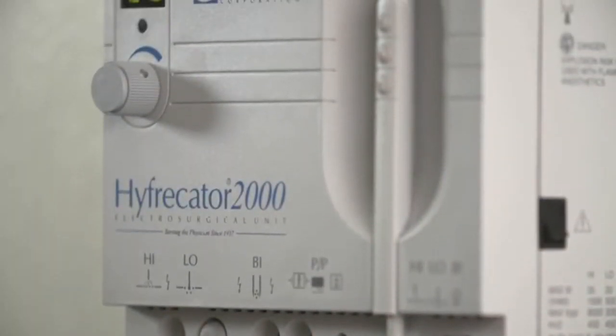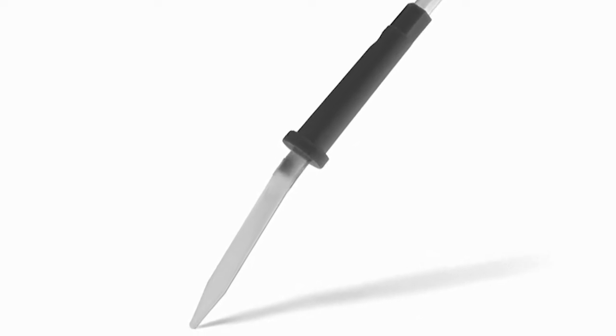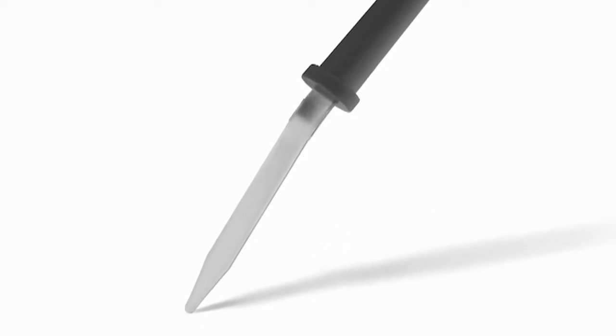Every electrosurgical procedure begins with the choice of the electrode and the power setting. The sharp-tipped electrodes are used for electrocoagulation and the treatment of fine vascular lesions. The blunt-tipped electrodes work well for electrodesiccation and curettage and the treatment of benign growths.